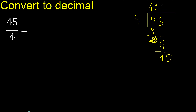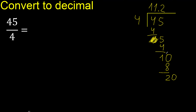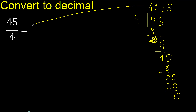4 multiplied by 2 is 8. 10 minus 8 is 2. There is no more number, so complete with 0 again — bring down to get 20. 4 multiplied by 5 is 20. Subtract: 0 remainder. Finished.